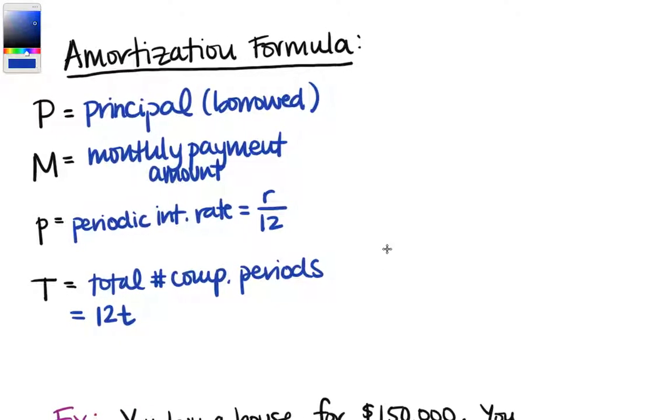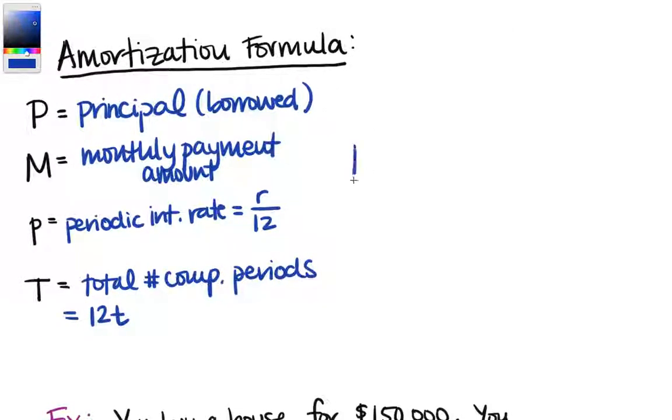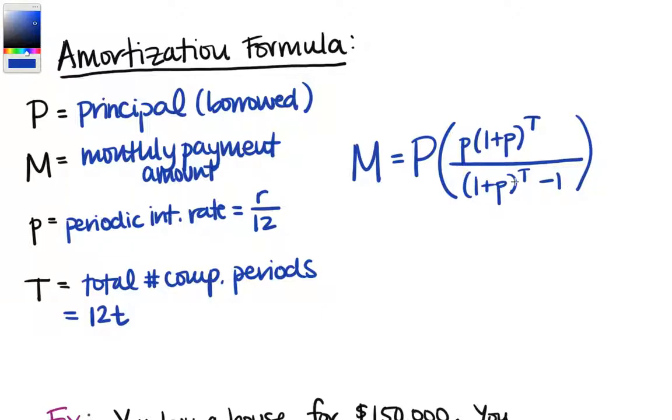Let's go ahead and write down the actual formula. It's a little complicated looking. So big M equals big P times little p times one plus little p to the capital T over 1 plus little p to the capital T minus 1. There is our amortization formula and you always want to remember with this complicated fraction you want to work inside out. So 1 plus p then raise that to the T then multiply then divide all of that. And again this is easier on a calculator where you can put in multiple operations at once.